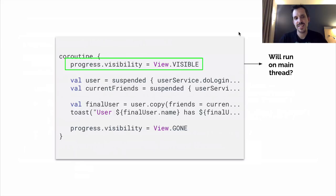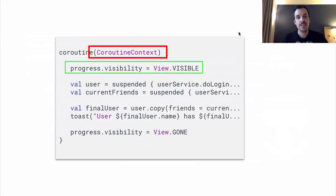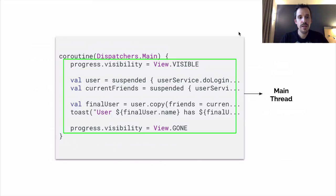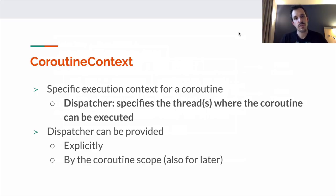The answer to what thread that first line runs on is: it depends. It depends on how we configure the coroutine context, and we'll see later how to do that. The coroutine context specifies — among other things, since it's like the overall configuration of the coroutine — what thread or number of threads it needs to use. One of those configurations is the dispatcher, which specifies the threads where the coroutine can be executed. We'll leave the concept of coroutine scope until the end because it's a bit more complex.